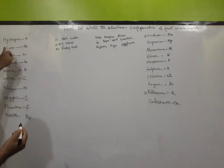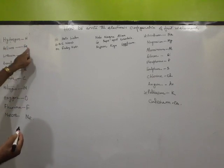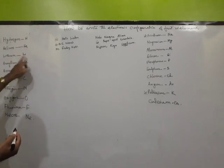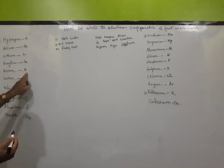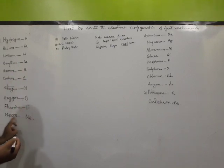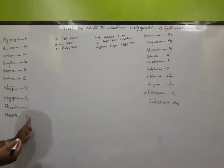The symbols are: hydrogen H, helium He, lithium Li, beryllium Be, boron B, carbon C, nitrogen N, oxygen O, fluorine F, neon Ne.